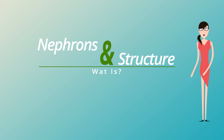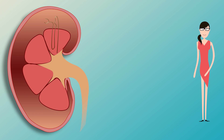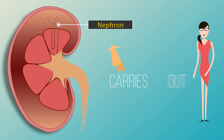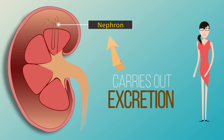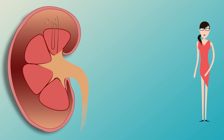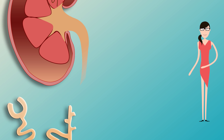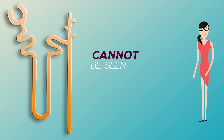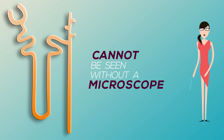The first thing we're going to look at is nephrons and their structure. Each kidney is made up of thousands of tiny tubules called nephrons. The role of the kidneys in excretion is carried out by these individual nephrons, so by studying how a nephron works we can understand the overall function of the kidney. Nephrons are way too small to be seen with the naked eye, and it's even difficult with a microscope because of their winding structure.